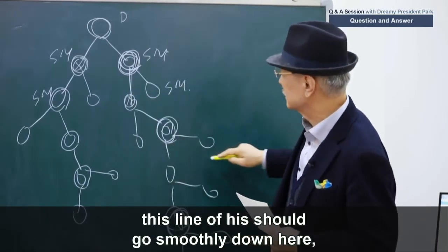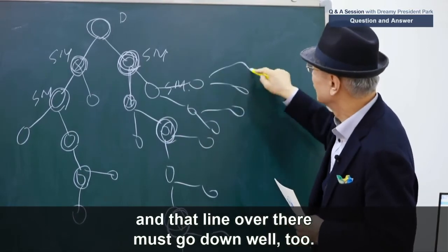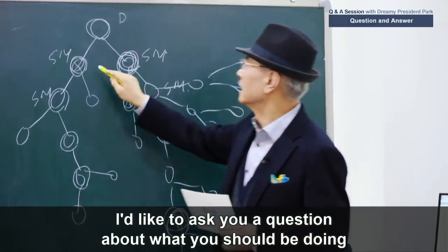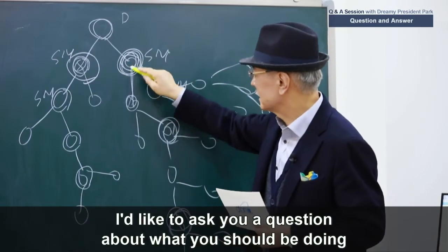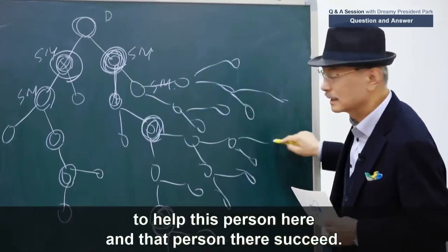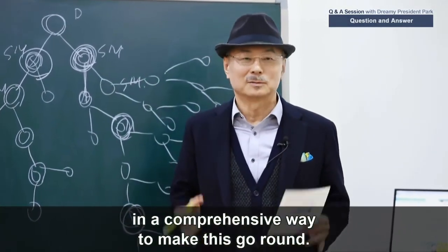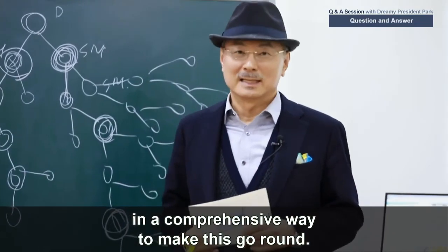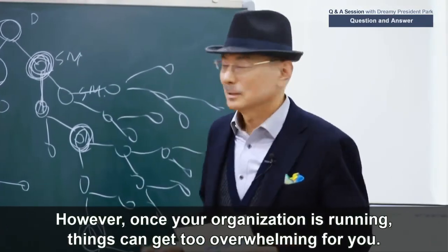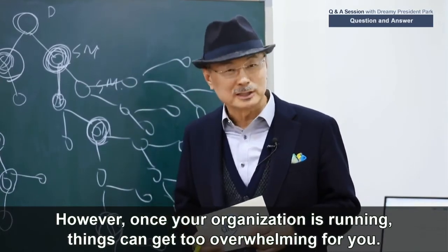For this person to do well, this line of his should go smoothly down here, and that line over there must go down as well. I'd like to ask you a question about what you should be doing to help this person here and that person there succeed. You should be overseeing the entire network in a comprehensive way to make this go round. However, once your organization is running, things can get too overwhelming for you.